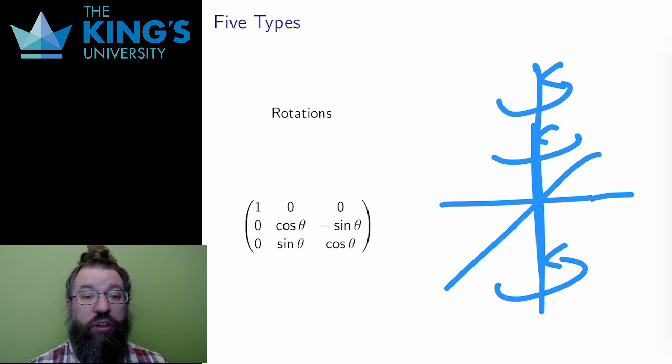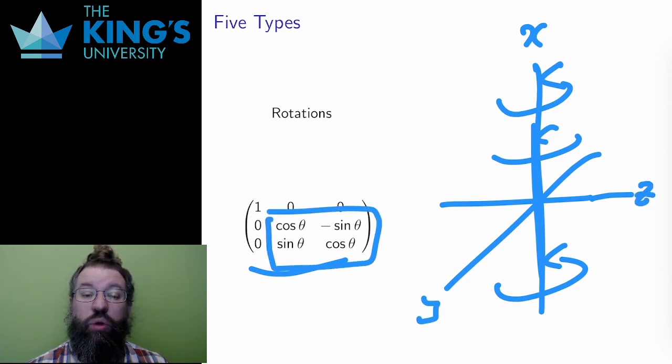The matrix shown here is rotation about the x-axis in R3. The rotation matrix from R2 is put in the yz part of this matrix, showing that those coordinates change while the x-coordinate is fixed, since it is on the axis.